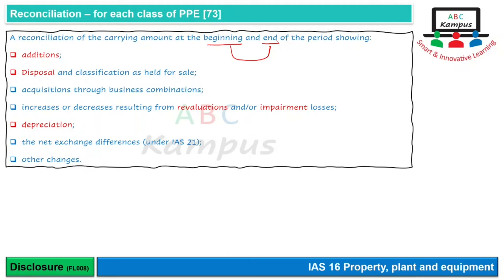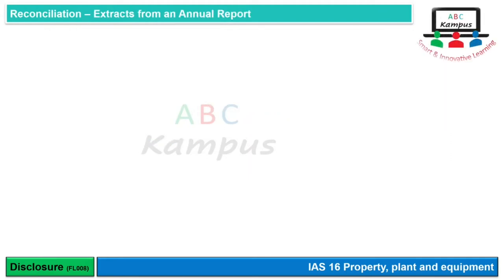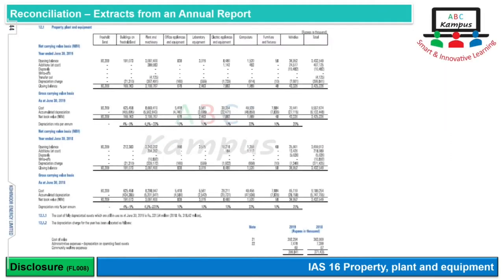Ye reconciliation practically kaafi huge hoti hai aur bahut saari different classes of assets hoti hain company mein. Ek annual report ke extracts mein dekha ja sakta hai ke 9 classes of assets hoti hain, jinke liye alag-alag poori detail banti hai aur phir ek total ka column bhi hota hai.